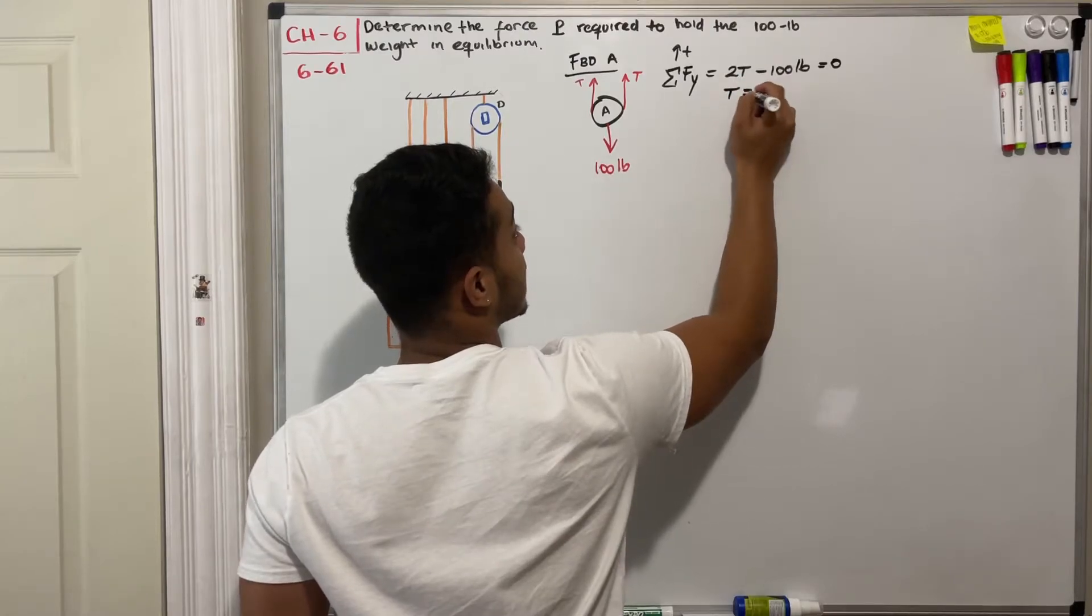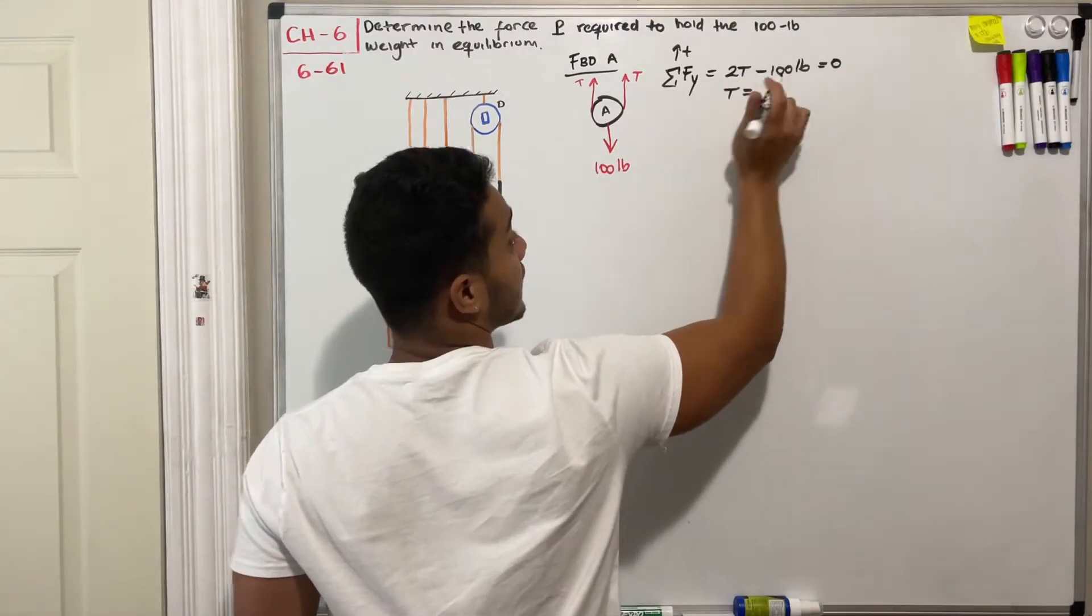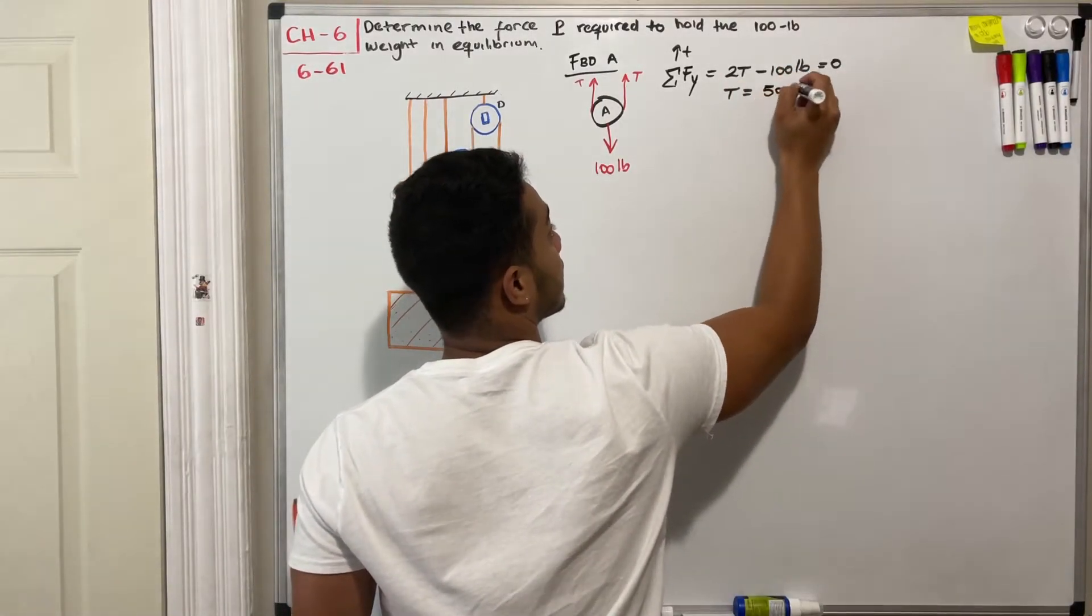Therefore we can say then that T will be equal to positive 100 when I move it to the other side, divided by 2, and it will give me 50 pounds.